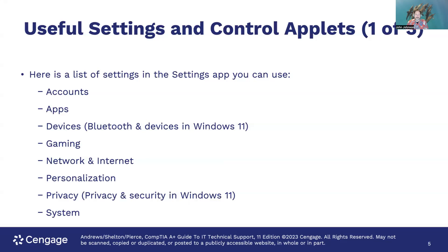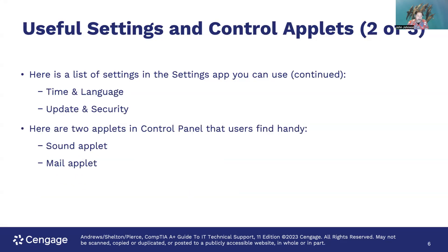Some useful settings and control applets include Accounts, Apps, Devices or Bluetooth and Devices in Windows 11, Gaming, Network and Internet, Personalization — also known as Privacy and Security in Windows 11 — System, Time and Language, and Update and Security. Two control panel applets you'll probably find most handy are the Sound applet and the Mail applet.